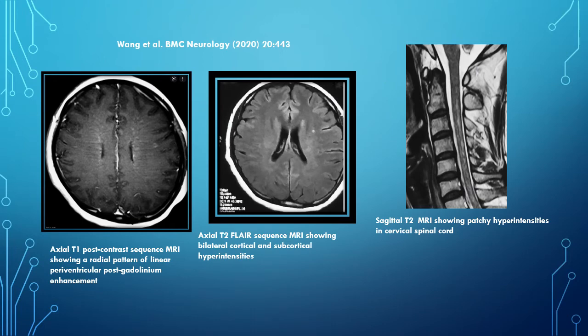MRI scans from a patient with this condition from the paper by Wang et al. in BMC Neurology in 2020. The first scan is an axial T1 post-contrast MRI showing radial pattern of linear periventricular post-gadolinium enhancement. The second scan is an axial T2 FLAIR MRI showing bilateral cortical and subcortical hyperintensities. The third scan is a sagittal T2 MRI showing patchy hyperintensities in the cervical spinal cord.